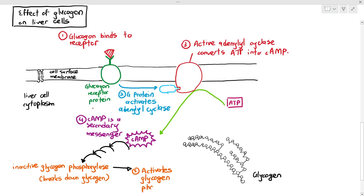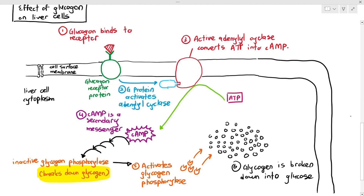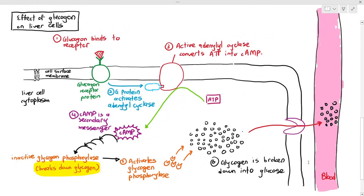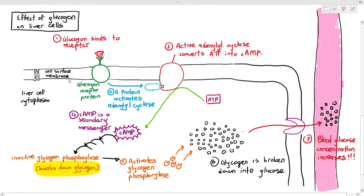Glycogen phosphorylase was inactive, but in the cascade reaction it becomes activated. Now that glycogen phosphorylase is activated, it can break down glycogen into glucose. The glucose molecules then diffuse out of the cell back into the blood, and when they enter the blood, your blood glucose concentration increases. That is essentially how glucagon affects the liver cells — a perfect example of cell signaling and signal transduction.